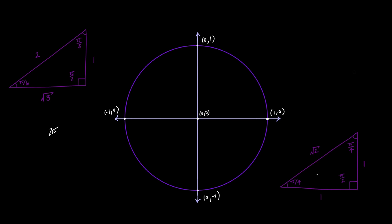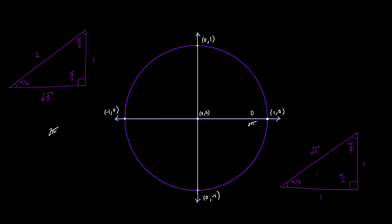Knowing that the full circle is 2 pi, we treat the starting point as 0. Once we rotate fully around, we've gone 2 pi radians, so that point is also 2 pi. The point directly across is half the circle, so we rotate half of 2 pi — that's 2 pi over 2 — and the 2s cancel to leave us with pi. So that arm needs to be labeled pi.